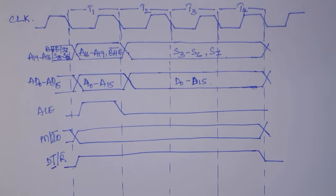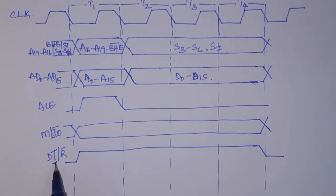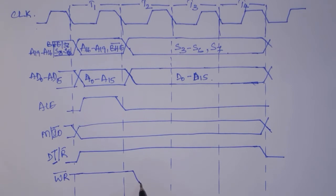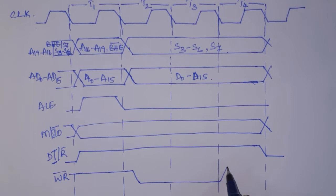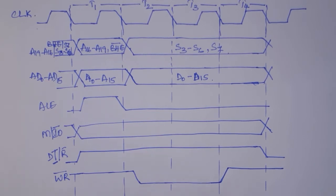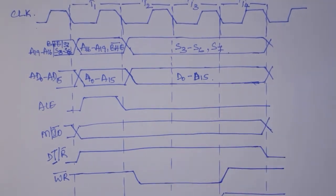DT/R bar is high because it is transmit, so the transceiver must be enabled for transmitting. Then Write bar: you need to show the WR bar signal — in the read cycle we showed the read signal, but here WR bar must be low from T2 through the entire T3 state. Also, DEN bar (Data Enable) must be low as well. When DEN bar is low and WR bar is low, only then is the data transmitted to the IO devices.